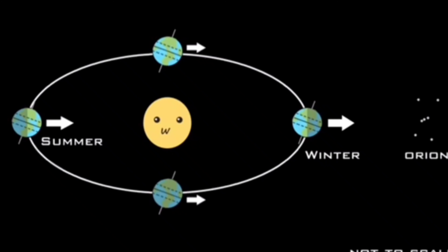I honestly couldn't find one entire month where Orion wasn't visible somewhere on Earth. There's something going on, because in summer and spring you can see Orion — and I'm going to show examples from the southern hemisphere.